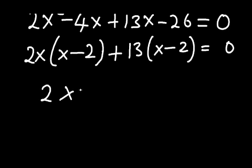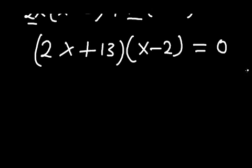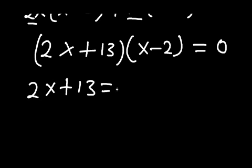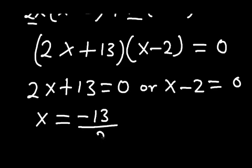So we have 2x times the quantity (x minus 2), plus 13 times the quantity (x minus 2), equals zero. Since we have (x minus 2) appearing twice, we take it out once: (2x plus 13)(x minus 2) equals zero. Now let's equate each factor with zero to find x: 2x plus 13 equals zero gives x equals negative 13 over 2, or x minus 2 equals zero gives x equals 2. That's how to solve this problem.